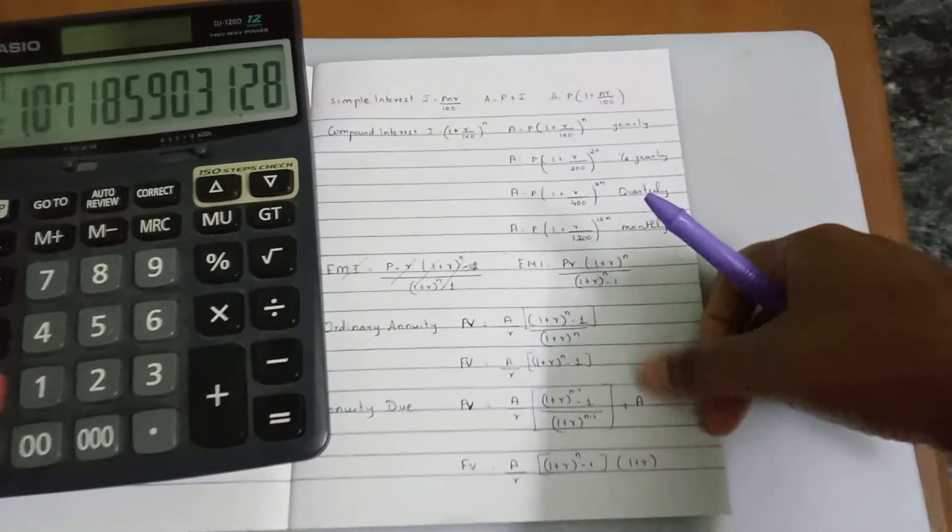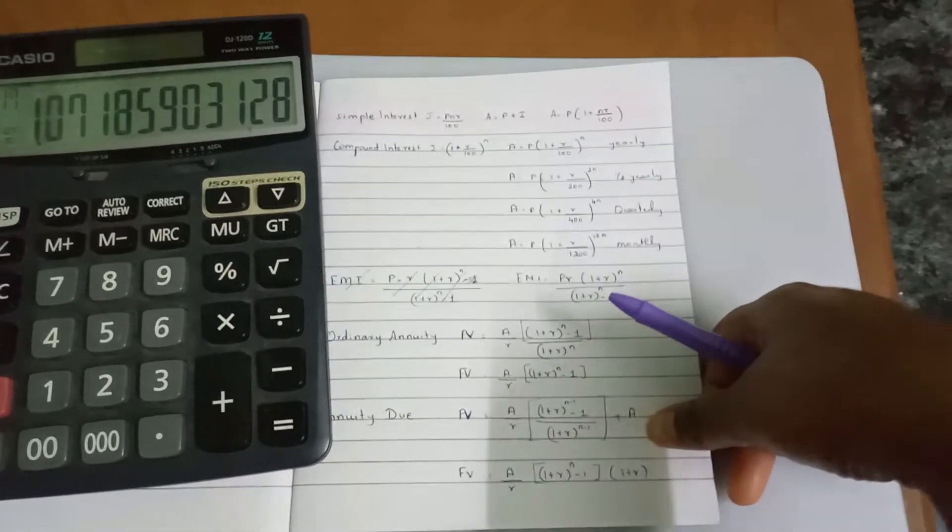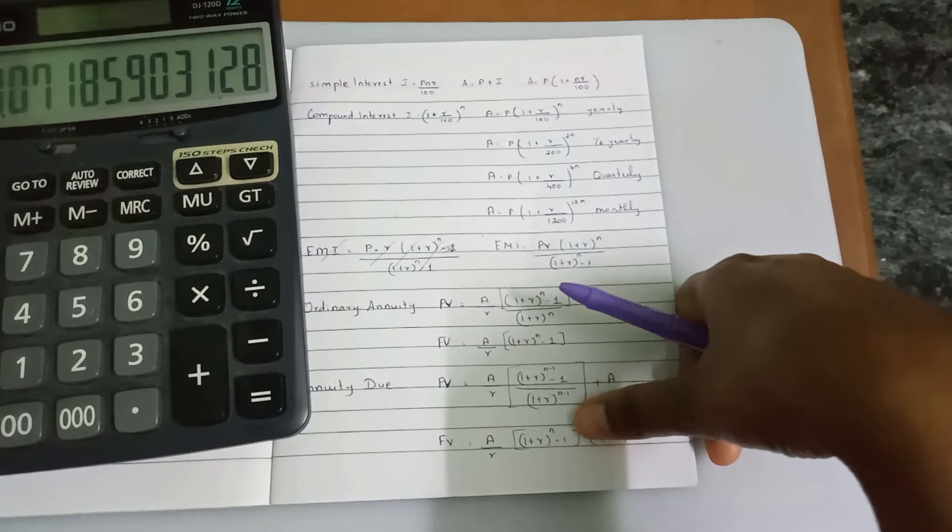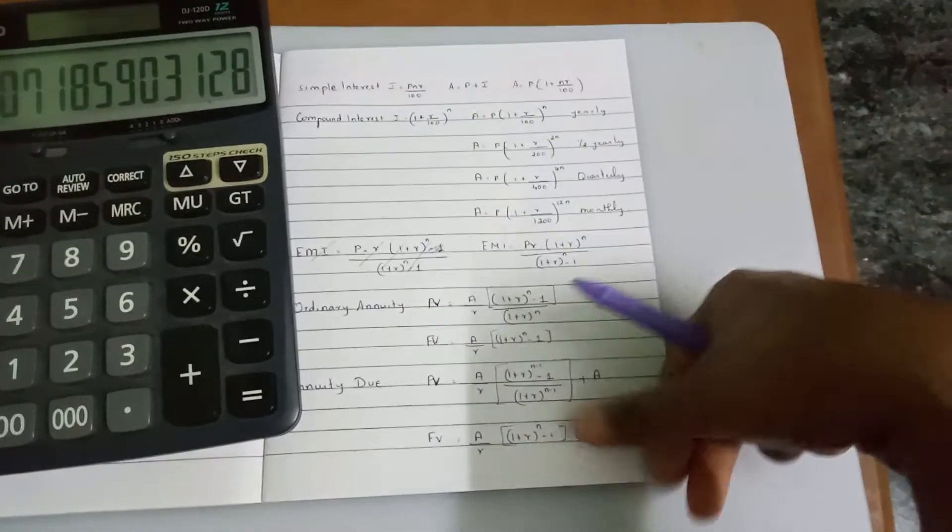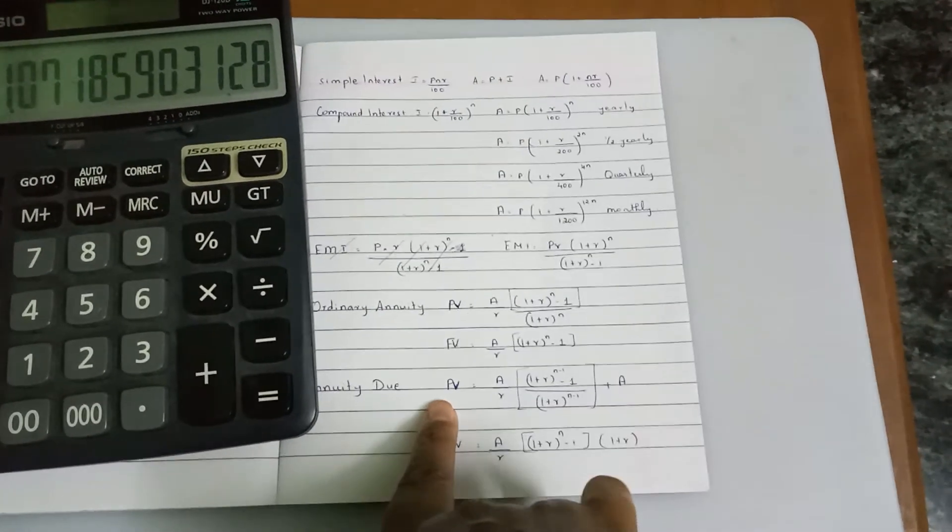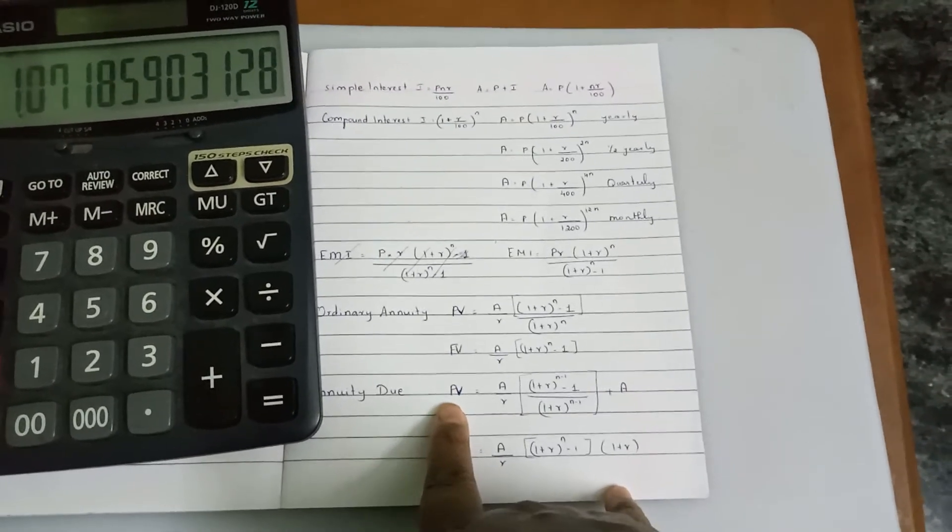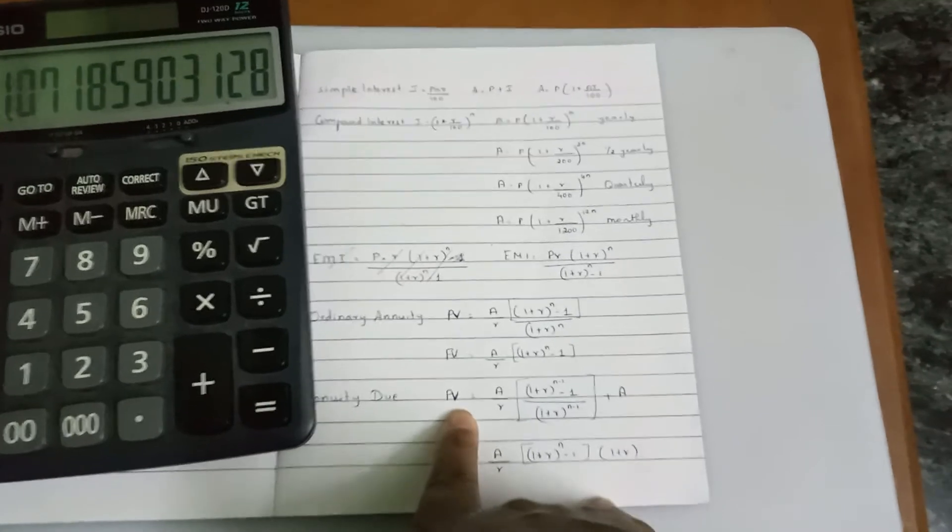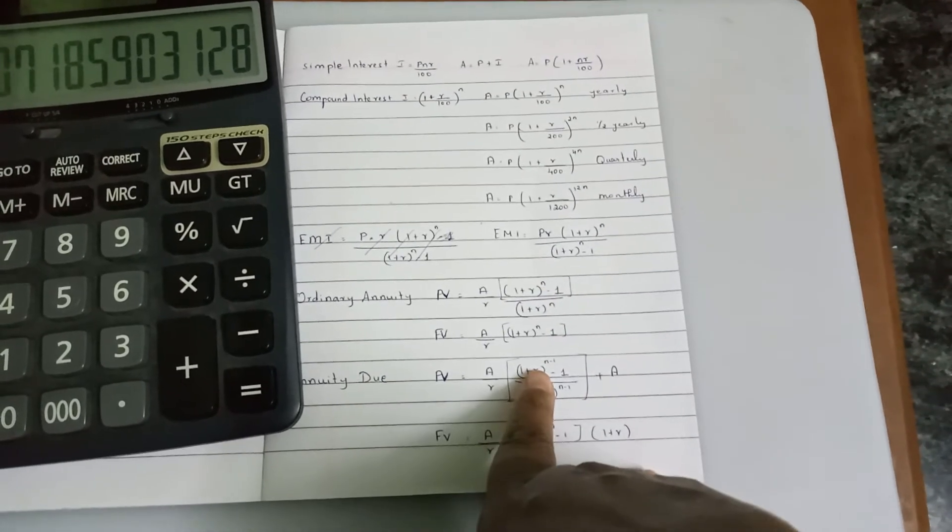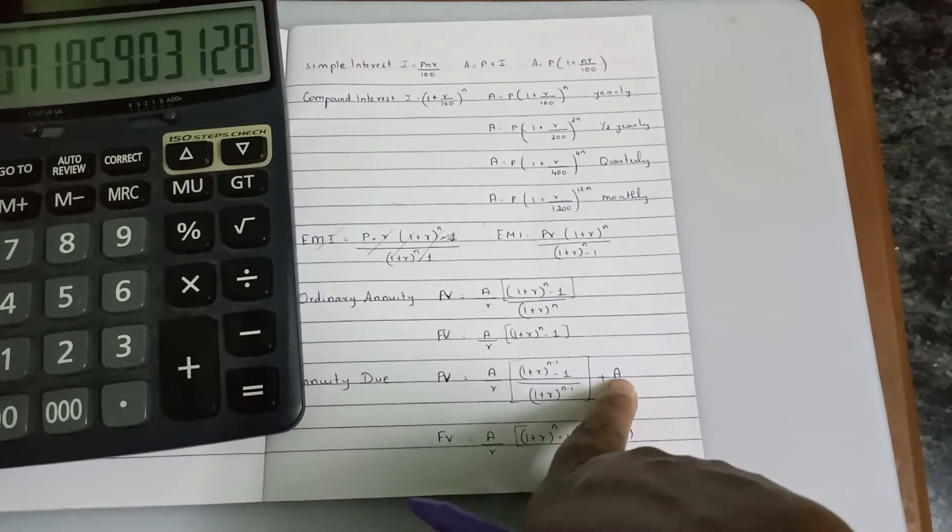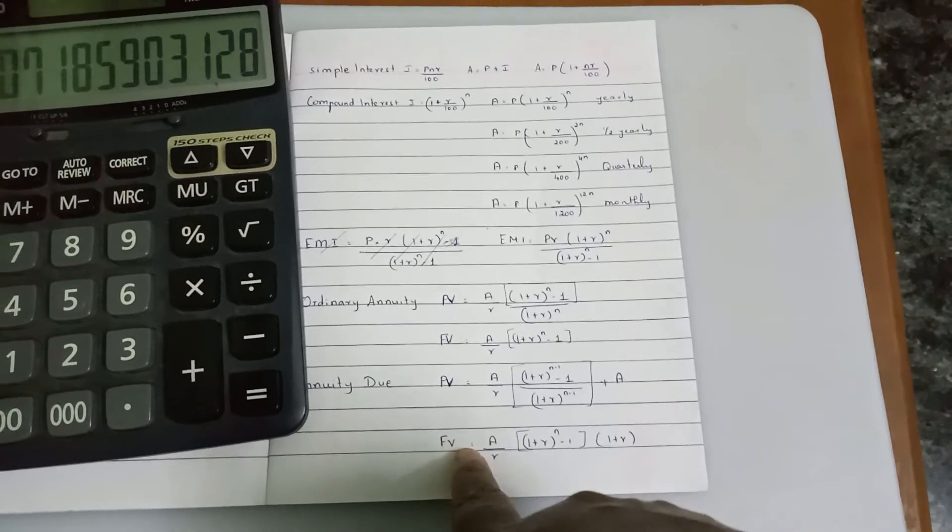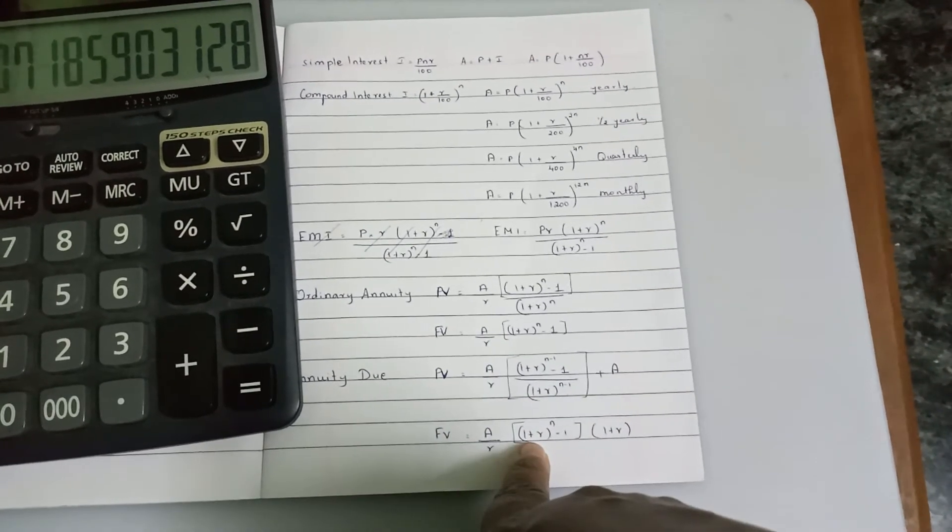For annuity due, we pay the amount at the beginning of the month rather than the end. We pay the deposit at the beginning of the period. For the first year, the remaining years, we find the future value. This is the same: A by R times (1 plus R) to the power n minus 1.